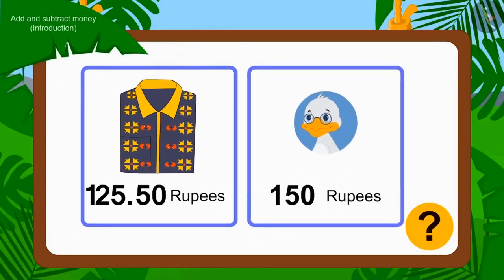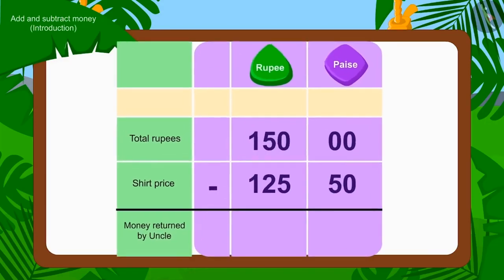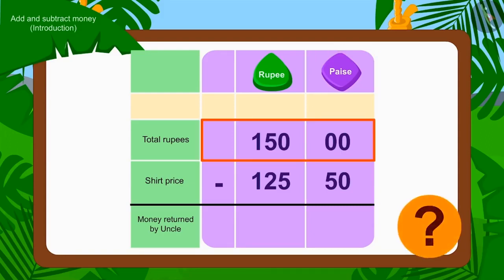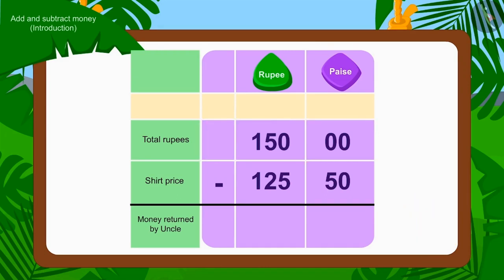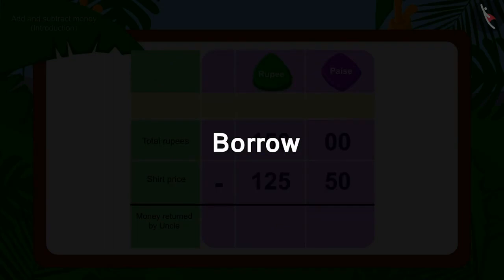Children, what operation do we have to use to find this out? Yes! Subtraction. We can write it as subtraction in this way. While subtracting, we first subtract the number of paise. Is there any paise for Rs. 150? No! Then how will we subtract 50 paise of Rs. 125.50 from 0 paise of Rs. 150? Do you remember the borrowing process learned in the lesson of subtraction? Here, we will use the borrowing process.